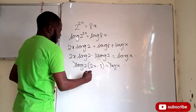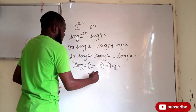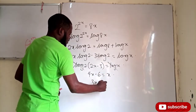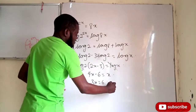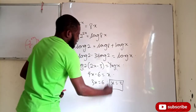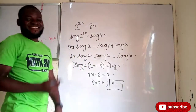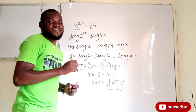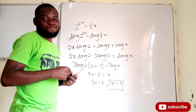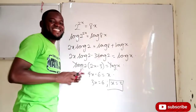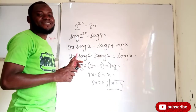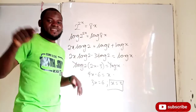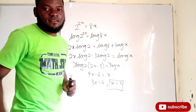If the log of 2 and log of x cancel, I have 4x minus 6 equals x, so 3x equals 6, and x equals 2. But there is an error here — this approach is not mathematically correct. If you can spot the mistake, let me know in the comment section below.